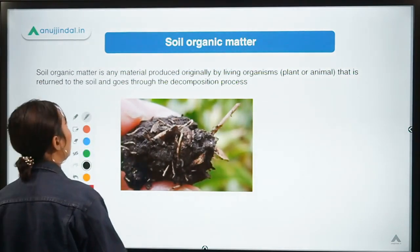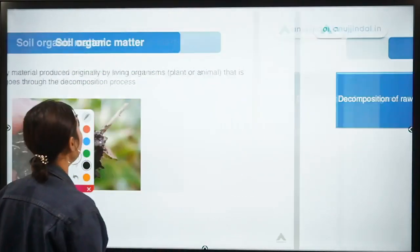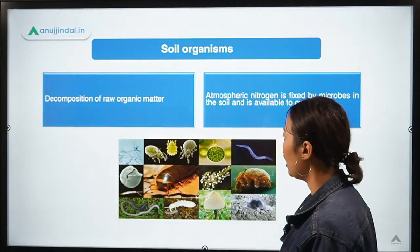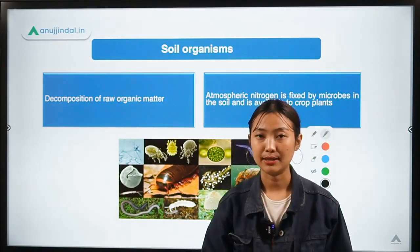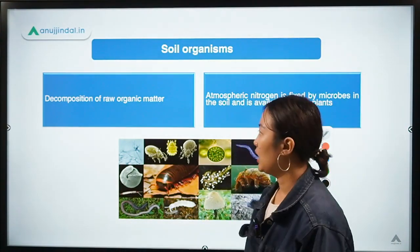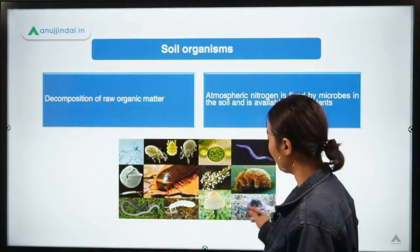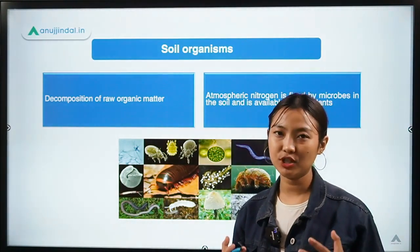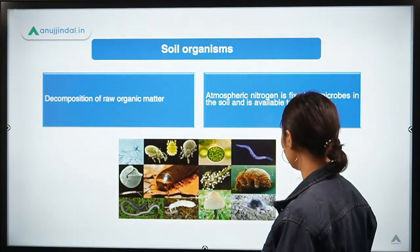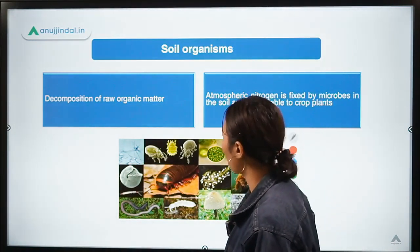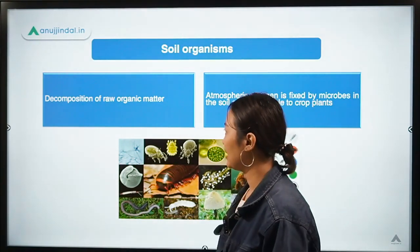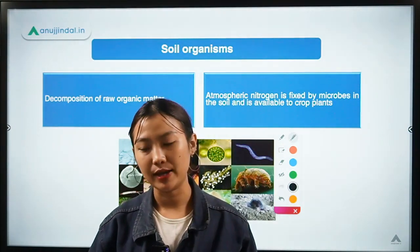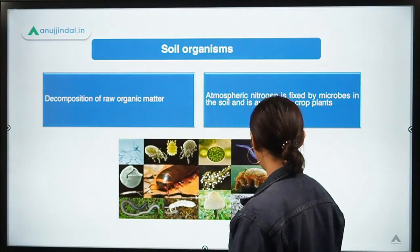Coming to soil organisms — these are the organisms or microorganisms present in the soil. They can be nematodes, protozoans, millipedes, insects, or any organisms present in the soil. The first role they play in crop production is that they help in the decomposition of raw organic matter, making it available to plants.